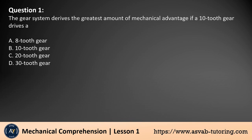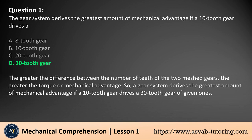Question 1. The gear system derives the greatest amount of mechanical advantage if a 10-tooth gear drives a: A. 8-tooth gear, B. 10-tooth gear, C. 20-tooth gear, D. 30-tooth gear. The answer is D. The greater the difference between the number of teeth of the two meshed gears, the greater the torque or mechanical advantage. So, a gear system derives the greatest amount of mechanical advantage if a 10-tooth gear drives a 30-tooth gear.